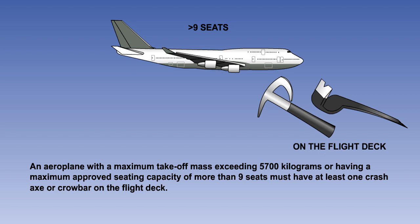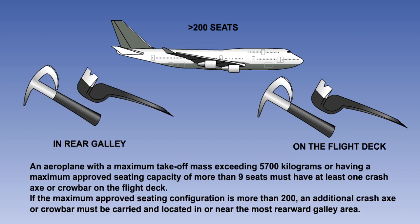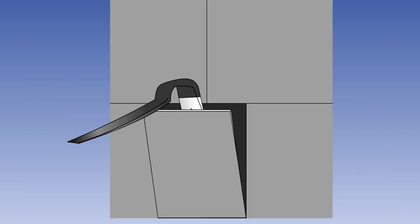An aeroplane with a maximum take-off mass exceeding 5,700 kilograms, or having a maximum approved seating capacity of more than nine seats, must have at least one crash-axe or crowbar on the flight deck. If the maximum approved passenger seating configuration is more than 200, an additional crash-axe or crowbar must be carried, and located in or near the most rearward galley area. Crash-axes and crowbars located in the passenger compartment must not be visible to passengers. They are used for levering and lifting hot panels or access doors to fight a fire behind them with a handheld extinguisher. Crash-axes are generally being phased out in favour of crowbars.